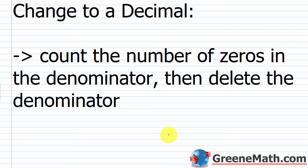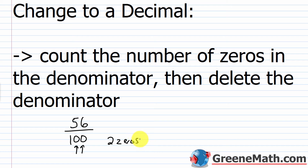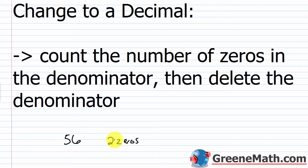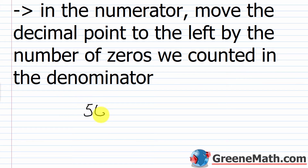So the first thing we're going to learn is how to change a decimal fraction to a decimal. If you're starting with a decimal fraction, first count the number of zeros in the denominator, then delete the denominator. For example, with 56 over 100, I count two zeros. I delete the denominator and just have 56. Then move the decimal point to the left by the number of zeros we counted. If you have a whole number, you can always write a decimal point after the rightmost digit.